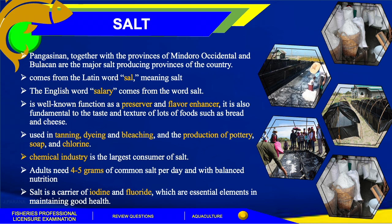Pangasinan, together with the provinces of Occidental Mindoro and Bulacan, are the major salt-producing provinces of the country. Salt comes from the Latin word 'sal,' meaning salt. It was once a valuable commodity used as currency for trading, and the English word 'salary' comes from the word salt. Salt functions as a preserver and flavor enhancer, and is fundamental to the taste and texture of foods such as bread and cheese. It is also used in tanning, dyeing and bleaching, and the production of battery, soap, and chlorine. The chemical industry is the largest consumer of salt. Adults need 4 to 5 grams of common salt per day.